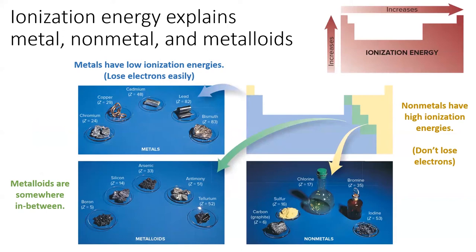Metals, on the other hand, have low ionization energies. These elements readily lose electrons, which gives them the majority of their properties. In between the metals and nonmetals, we have metalloids. As you might guess, these elements have intermediate ionization energies, meaning they have properties somewhat in between metals and nonmetals.